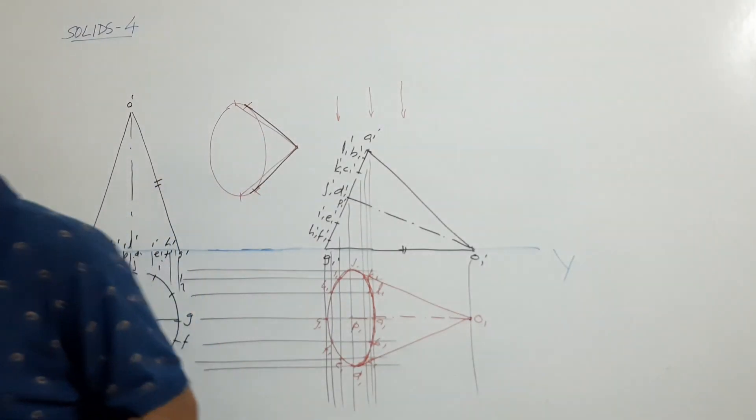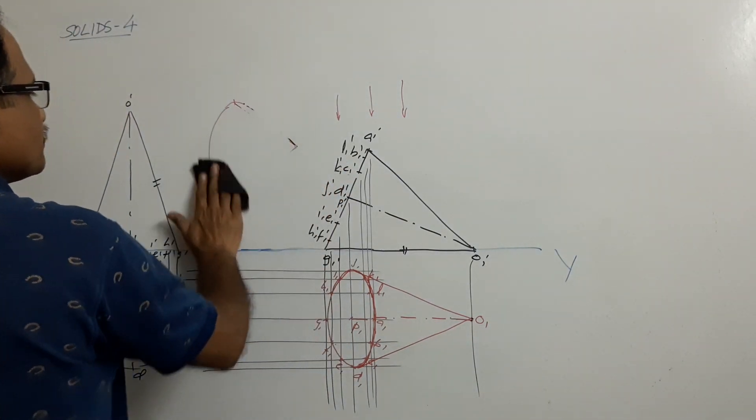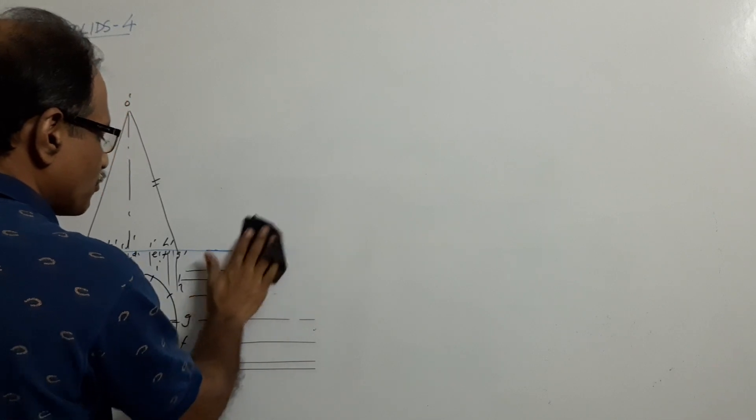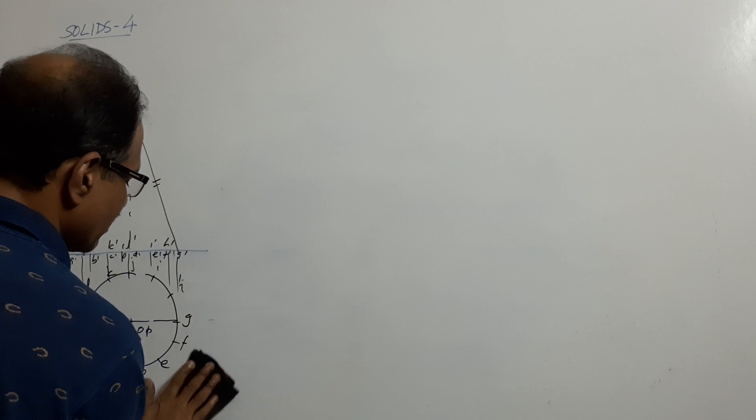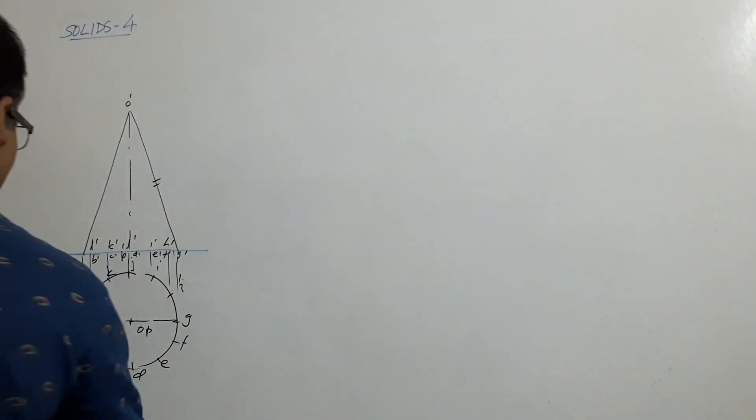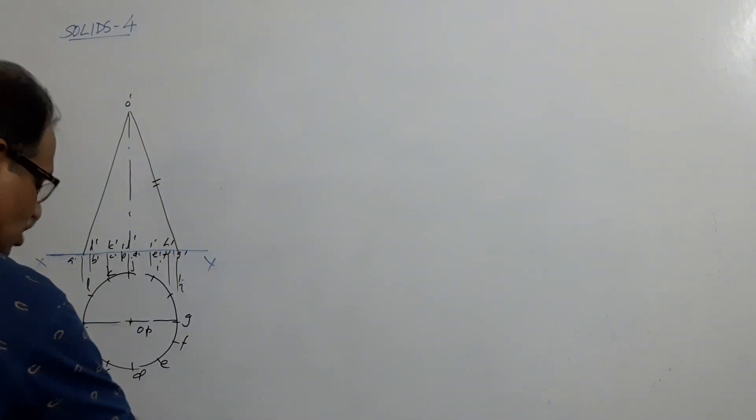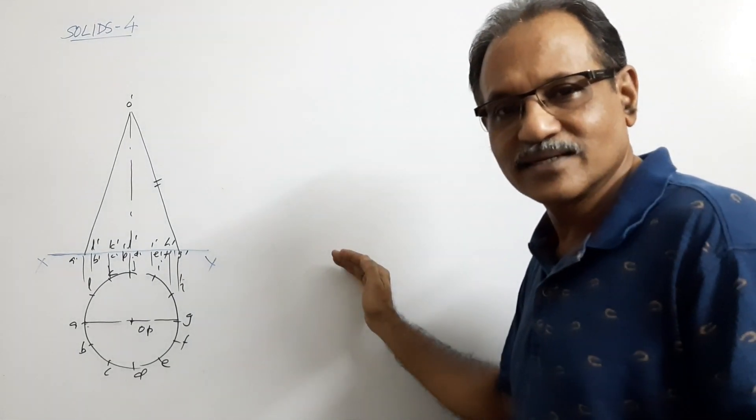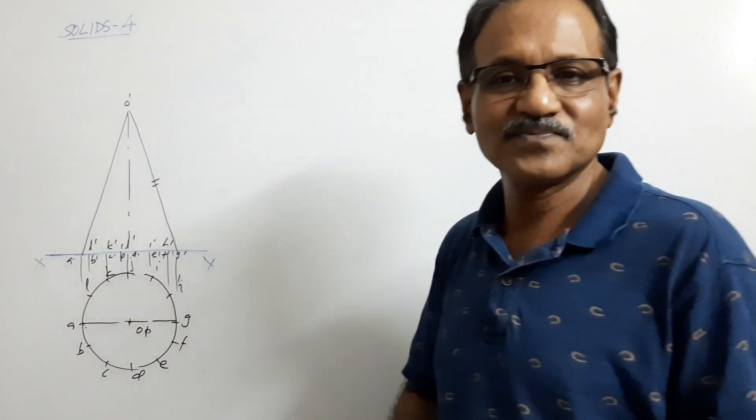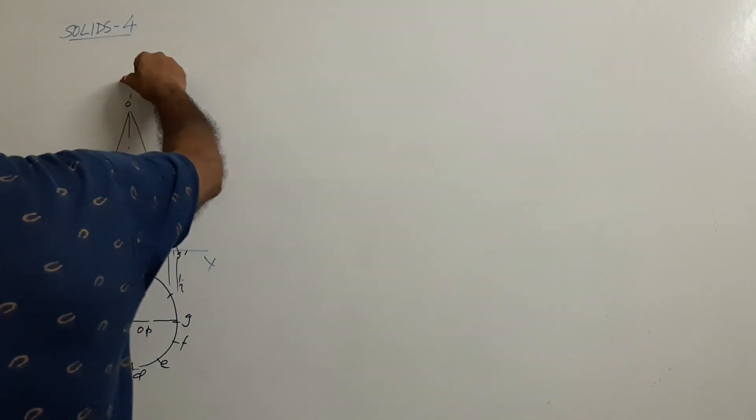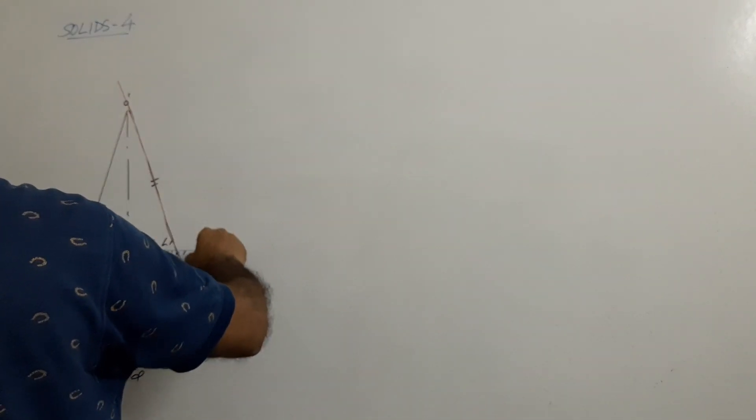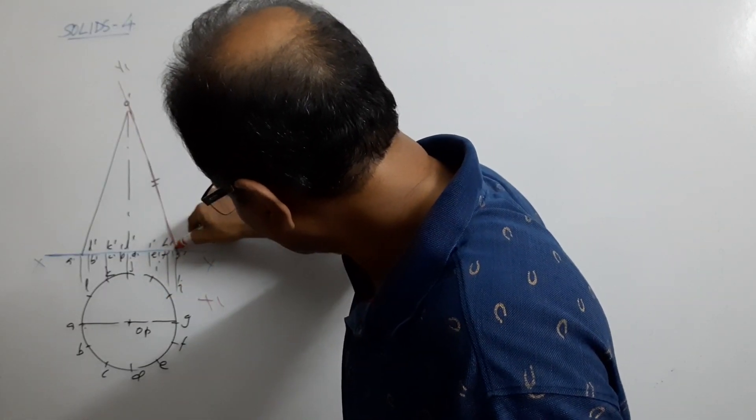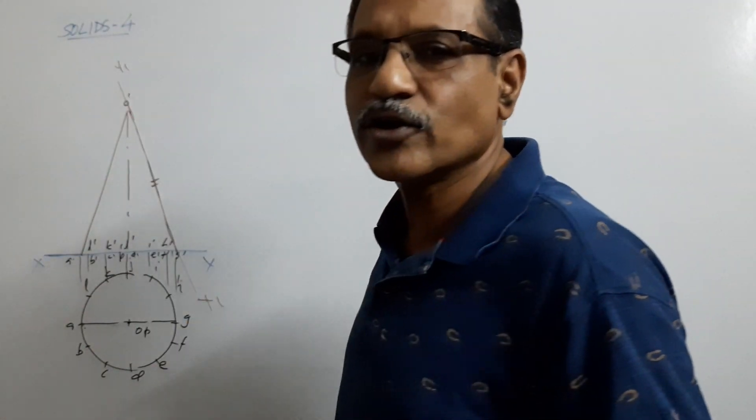Now, we draw the same question by auxiliary projection method. When you use auxiliary projection method, instead of bringing the object to the final position by redrawing the elevation, what you do? Bring the HP to the required position, so that the condition is satisfied. When you redrew it, the generator comes to XY line. By auxiliary, what you have to do? You have to bring the XY line to the generator. What does it mean? You have to draw an X1, Y1 passing through this generator. This generator, G dash, O dash. HP is brought there. Now what you have to do? You have to draw a new plan.